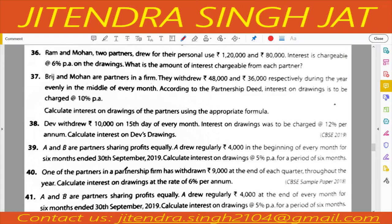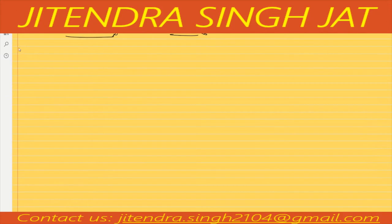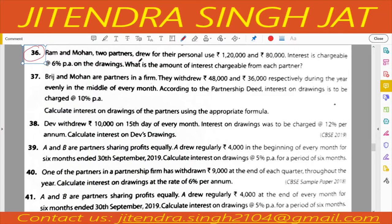Dear children, here are some basics of interest on drawing. There are some provisions which require calculating interest on drawing. I will explain two or three questions so you can easily solve them. Let's start from question number 36. Ram and Mohan are two partners who drew 1,20,000 and 80,000 for personal use. Interest is chargeable at the rate of 6% per annum on the drawings. What is the amount of interest chargeable from each partner? In this question, the date of drawing is not given, and when the date of drawing is not given, it is computed on an average basis — that is, for 6 months.